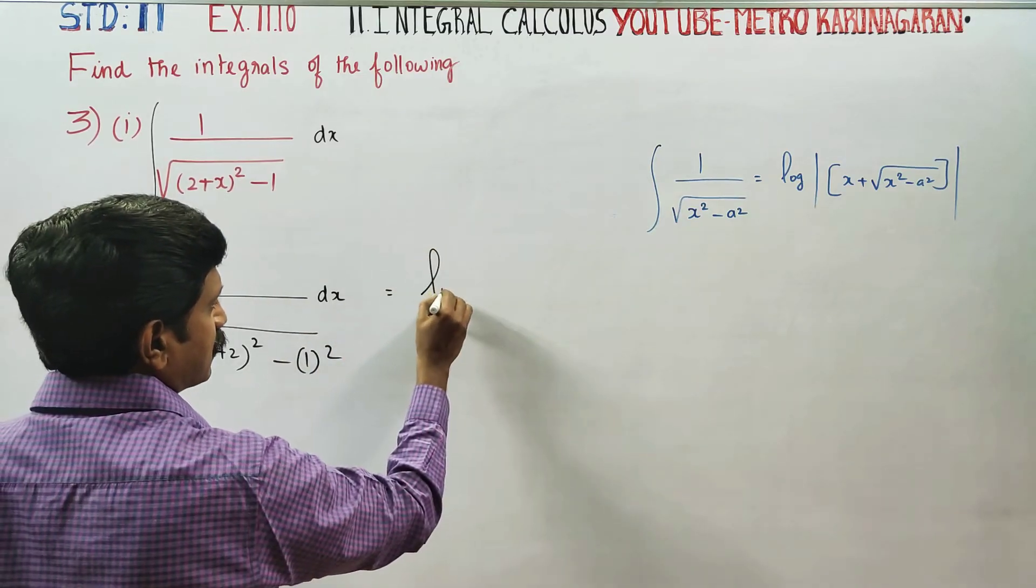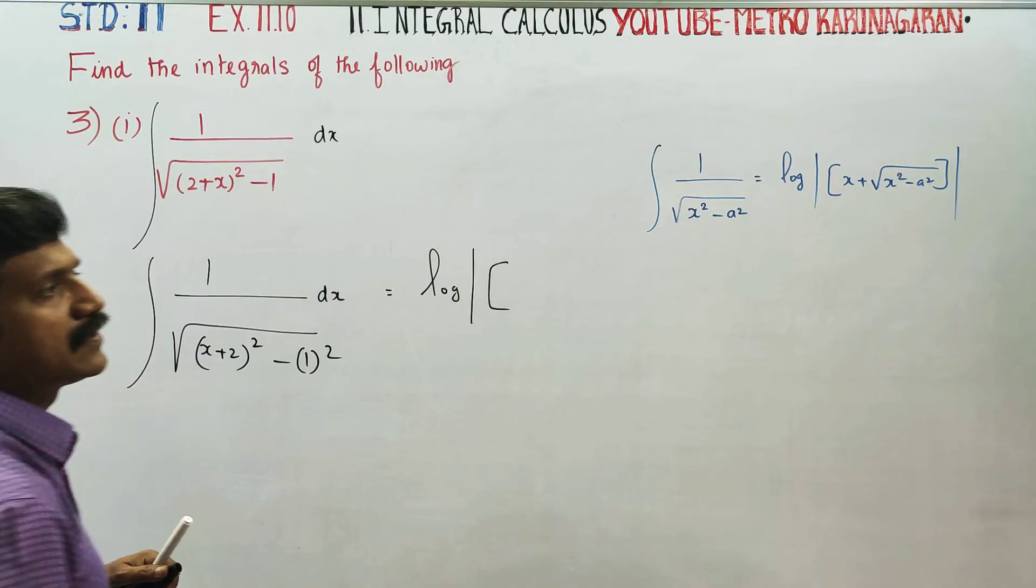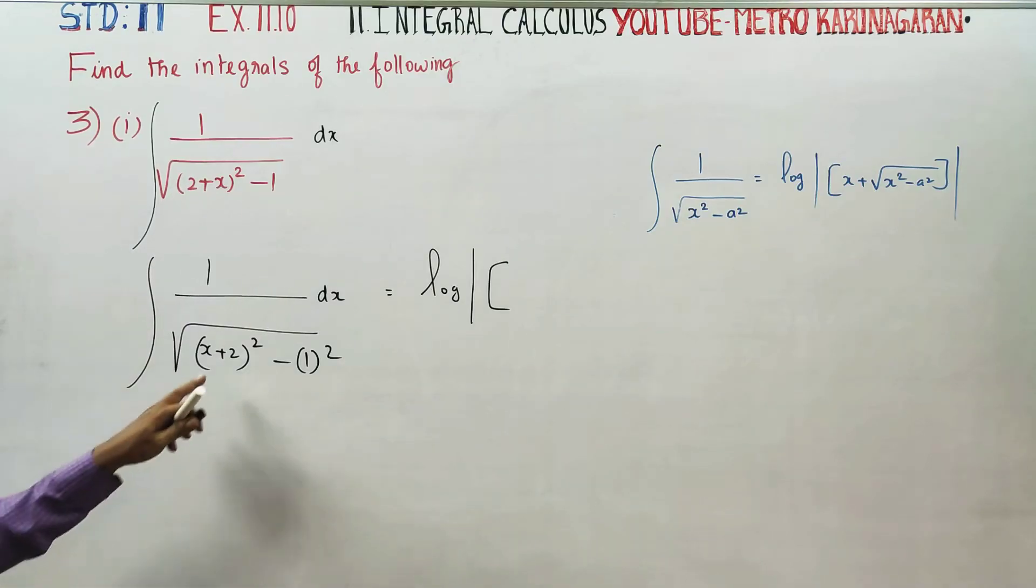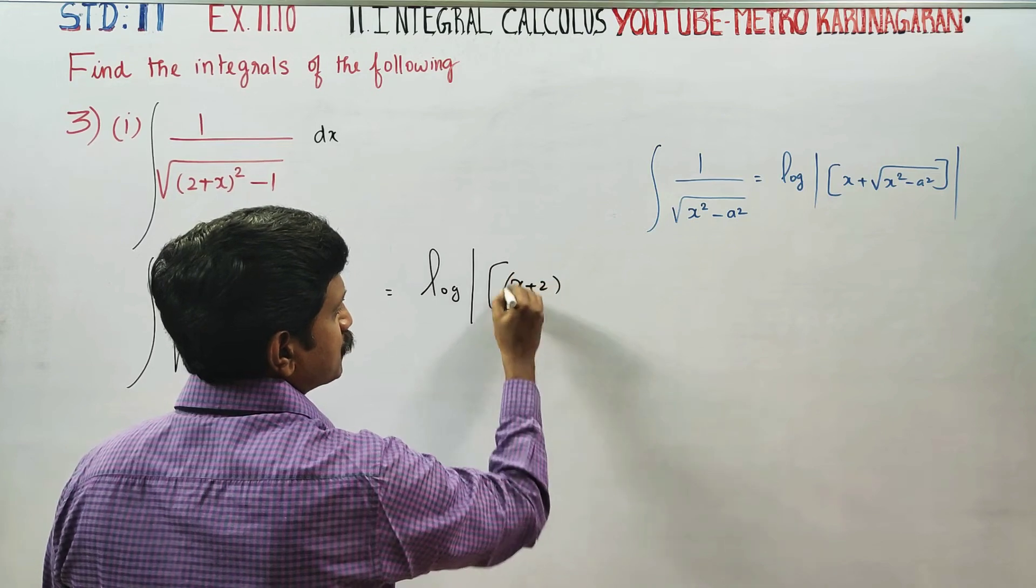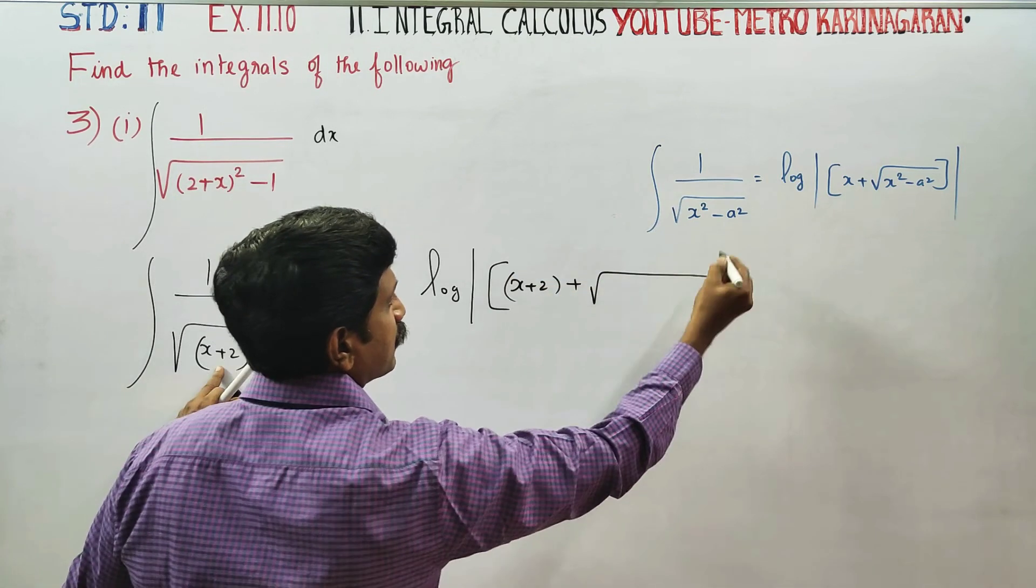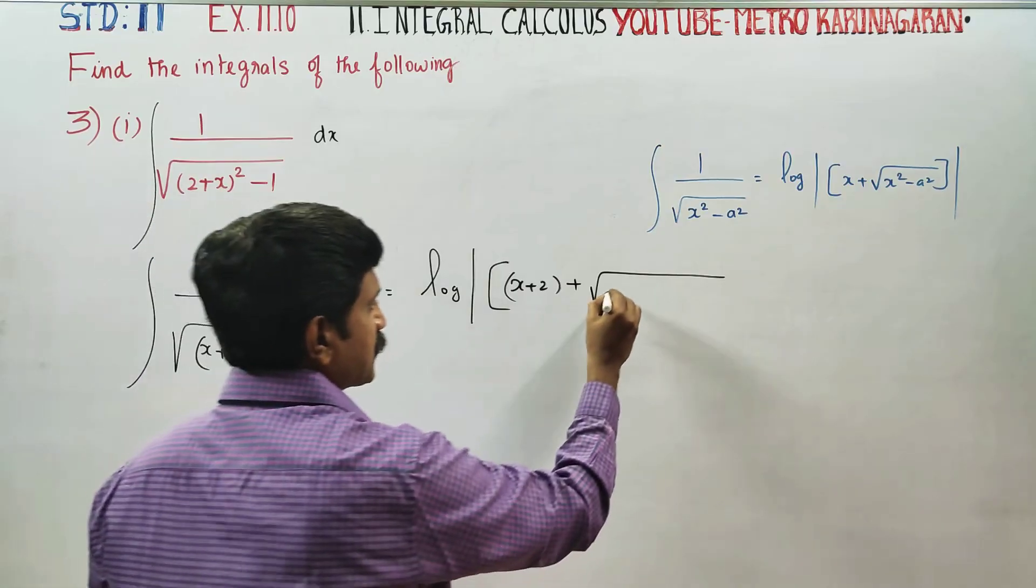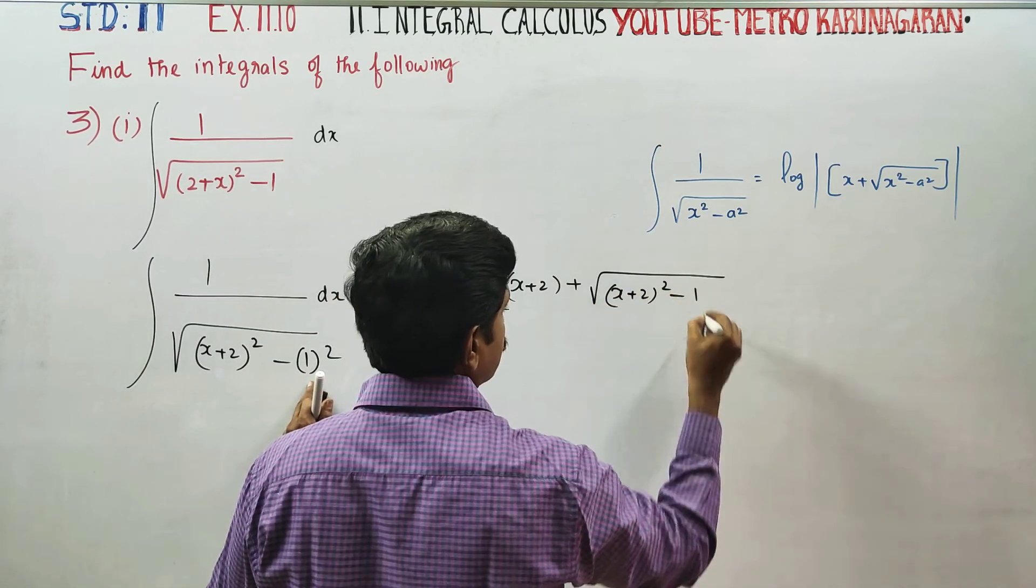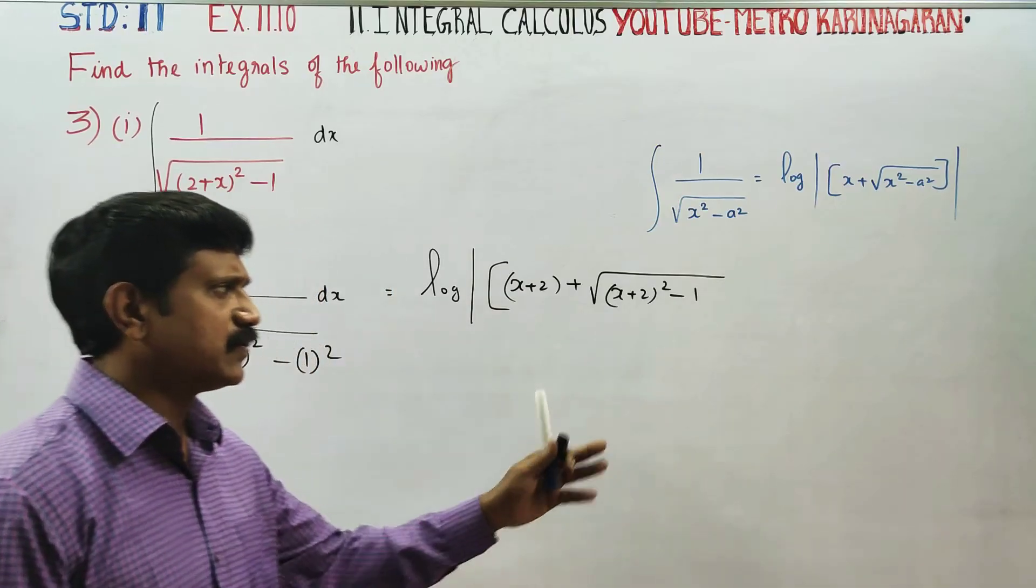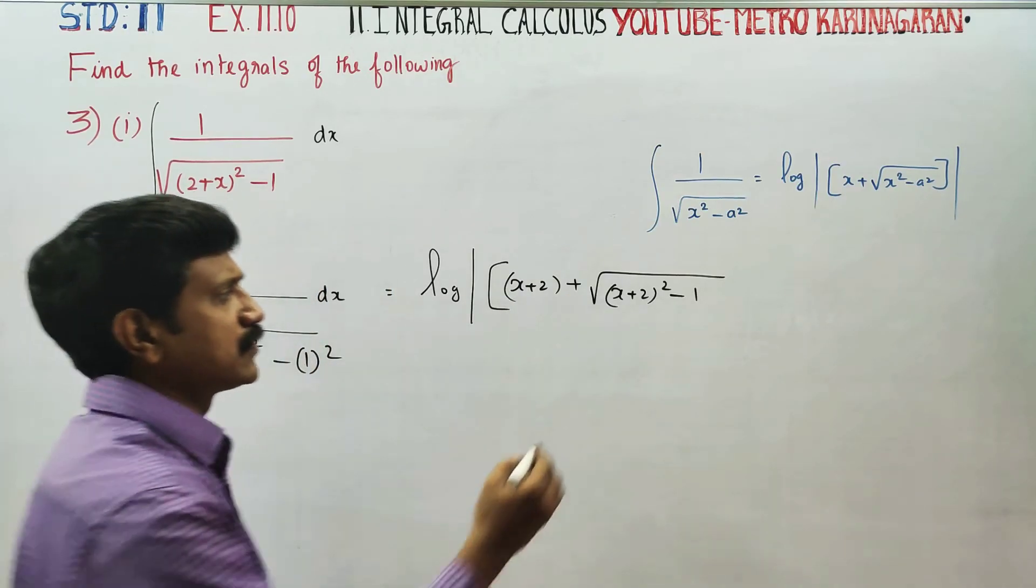Now, the answer is logarithm of modulus of X plus 2 plus square root of X plus 2 whole square minus A square. Since A square means 1 square, we write minus 1.